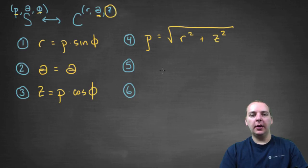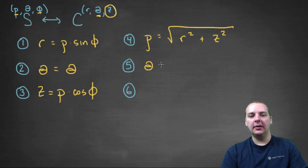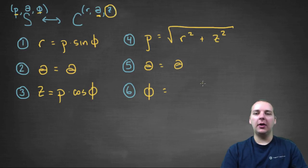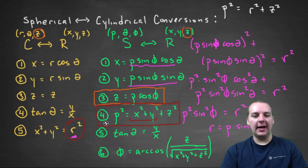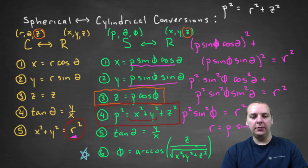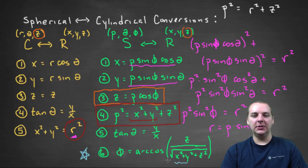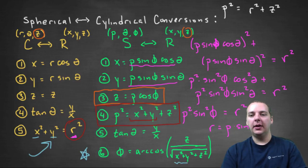For equation six, given rho and theta, how do we find phi? Looking at our old equations, there's a formula for phi in blue. It has z, which is fine for cylindrical, and x squared plus y squared — but we can swap that for r squared, same trick as before. So phi equals arccos of z over the square root of r squared plus z squared. It feels like cheating, but we're just using old results to find new ones.